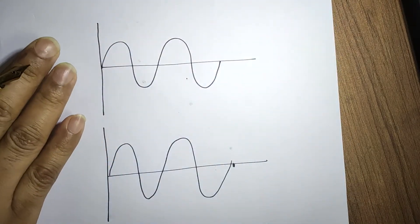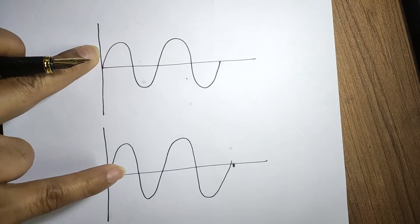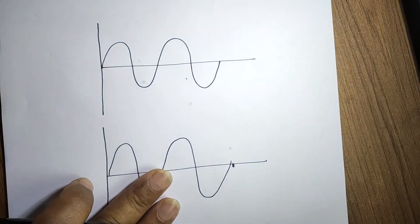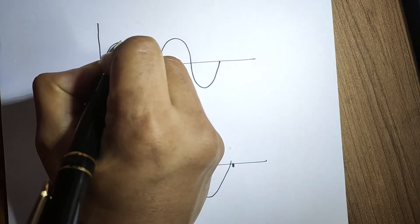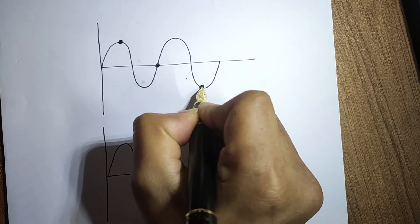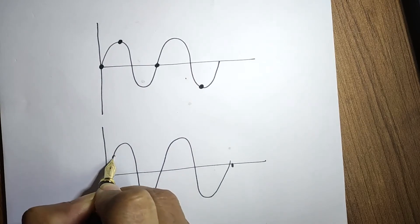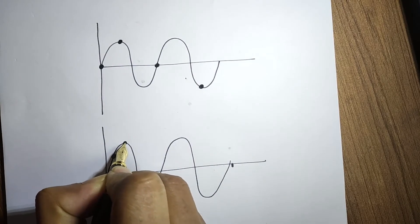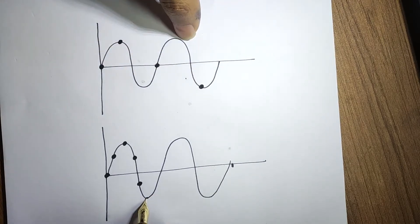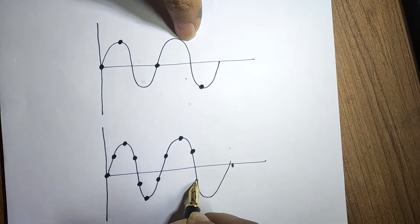Let's say we have a signal and I've drawn two versions of the same signal. I'll change the number of samples for each. In the first signal we take samples at only four points. In the second version we take many more samples from the signal. So for the first signal we have captured only four points, but on the second version we are taking a lot more samples.